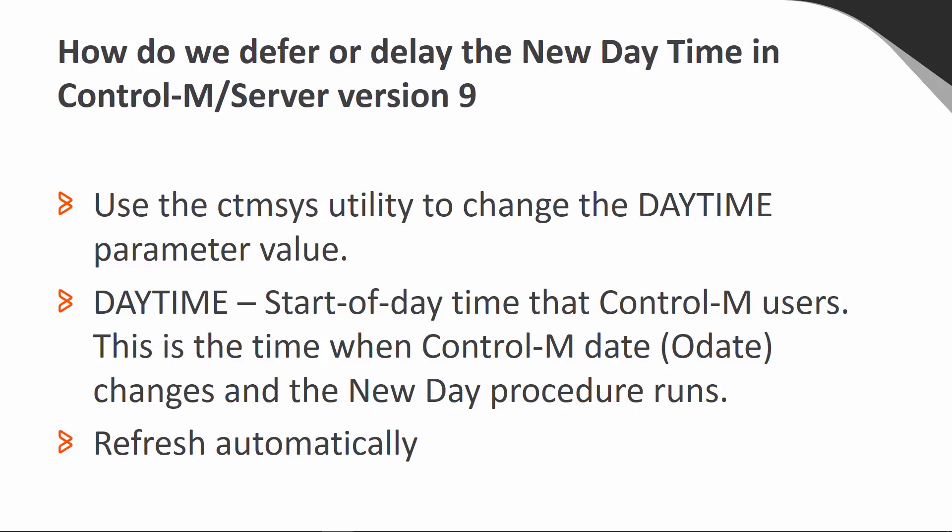If the delay is more than a day, the Control M Server should be shut down until it is ready to schedule the application jobs. In this case, the new day procedure will immediately be executed when the Control M Server is brought up, since it will have already passed its new day procedure time.